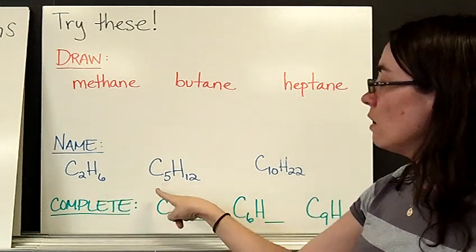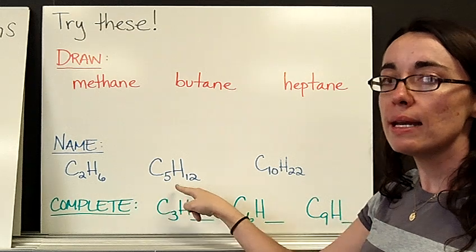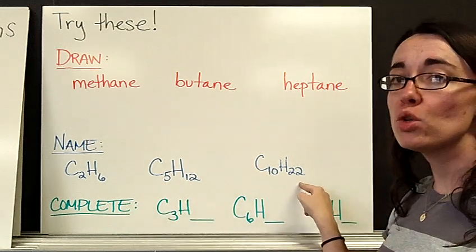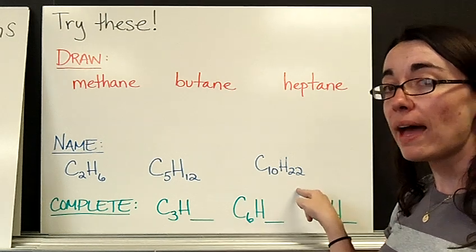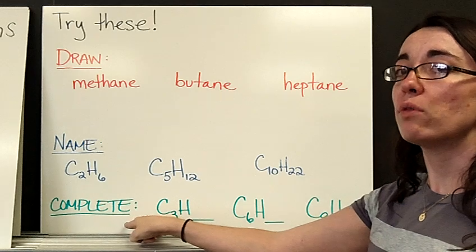Once you've tested those out, I would like you to give me the name for these. So if you have two carbons, C2H6, what should we name it? If you have C5H12, what should we name it? C10H22, what should we name that?